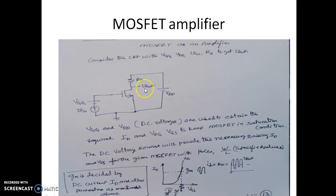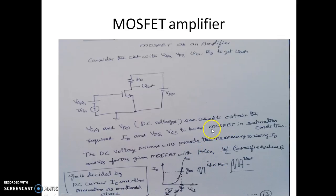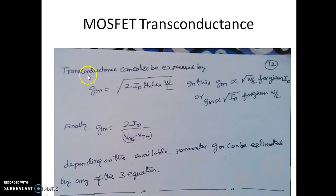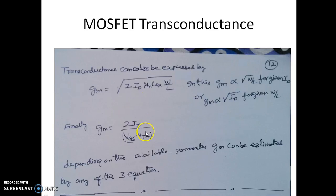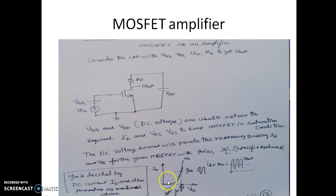With the values of μ and Cox — which is Kp — and W/L, the dimensions of the transistor, the transconductance GM of the MOSFET is determined by the DC current ID and other parameters. As seen in previous slides, the transconductance GM is given by any of three equations. Depending on the values of μ, Cox, W/L, VGS minus VTH, or ID, the value of GM is determined.